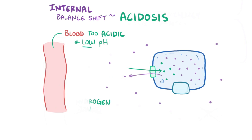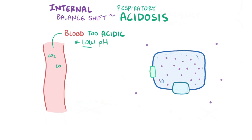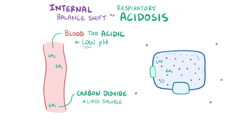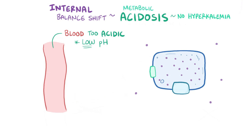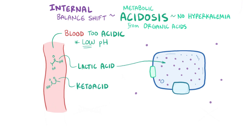This isn't always the case for acidosis, though. In respiratory acidosis, potassium levels aren't affected because CO2 is lipid-soluble and freely moves into cells without being exchanged for potassium — therefore, no hyperkalemia. Similarly, when there is a metabolic acidosis from excess organic acids like lactic acid and keto acids, protons can enter cells with the organic anion rather than having to get exchanged for potassium ions.